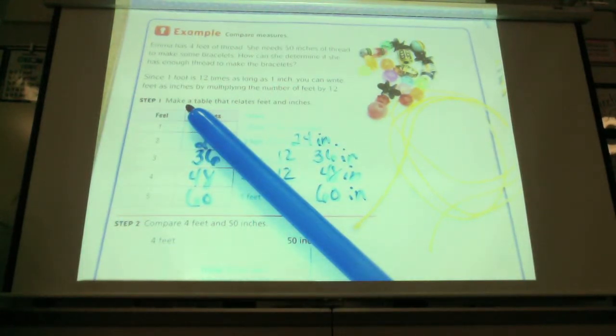And if she has four feet of thread, how many inches does she have? Look at our chart before you answer. Raise your hand when you know. Does Emma have enough to make the necklaces that she wants to make? I'm getting mostly no. How many inches does she have? Forty-eight. How many inches is she short? Two.